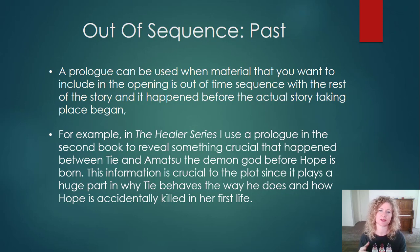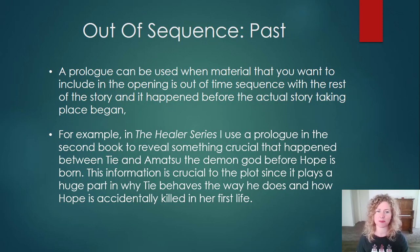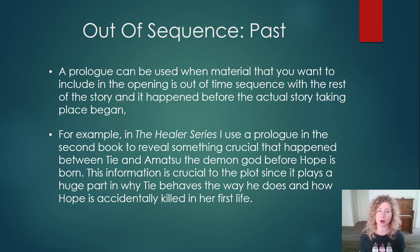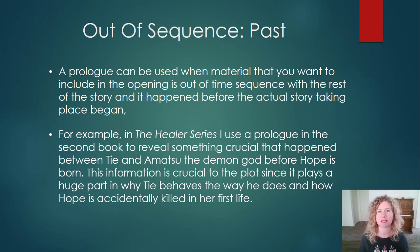In the second book, I use a prologue to reveal something crucial that happened between Tai and Ematsu, who is the demon god, before Hope is even born. I just didn't know how I was going to be able to put that into the story without bogging it down — it wasn't something that could just be told from someone's point of view. I wanted the event to actually be taking place where the reader could be drawn in and see what was happening between Tai and Ematsu, feel those emotions, and gain their reactions from it. Having Tai just tell it to Hope later on wouldn't have done that scene justice.